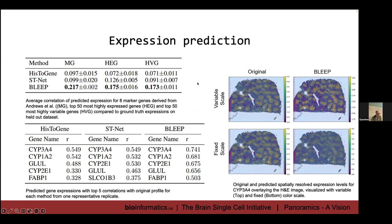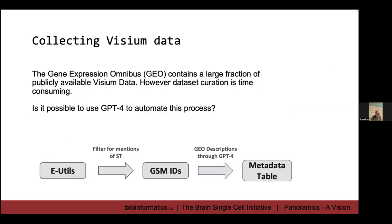This is one of the uses of spatial transcriptomics data that people will be exploring. An interesting question is: if we train on a lot of spatial transcriptomics data, can we help pathologists get more out of H&E images than they currently do? Right now they're only looking at morphology, but if you had a model with lots of spatial transcriptomics relationships between images and transcriptomes, could you do better classification than a pathologist from an image alone? That would be a cool thing to try.